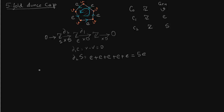The kernel of delta2 is 0, and the image of delta2 is 5Z. For H0: it is C0 modulo the image of delta1. Since delta1 is the zero map, H0 = Z / 0 = Z.